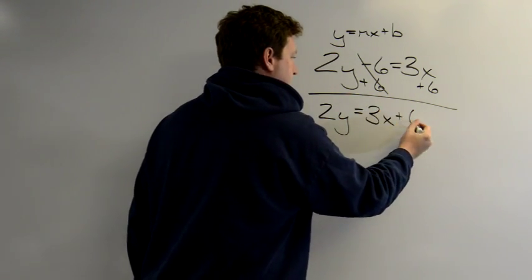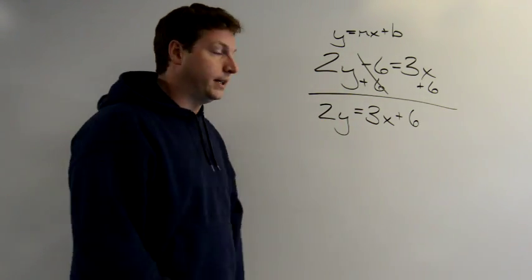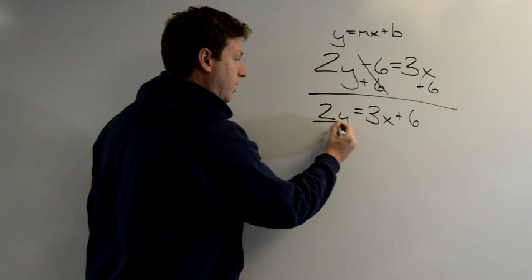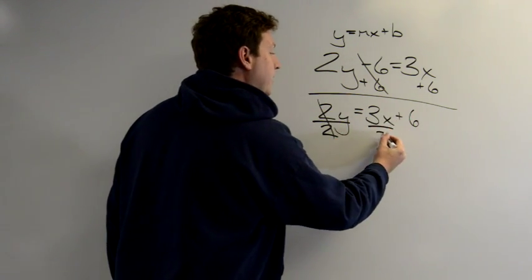3x plus 6. It looks pretty good at this point. I see that I've doubled my equation here. Really, I just want y by itself, so I still need to divide by 2. I must divide everything by 2.